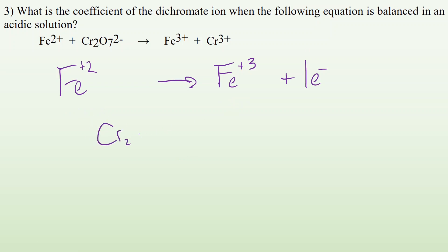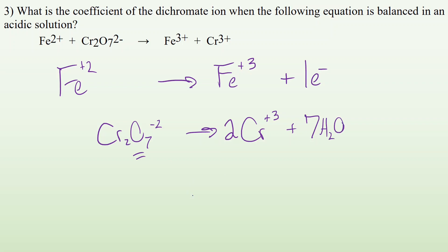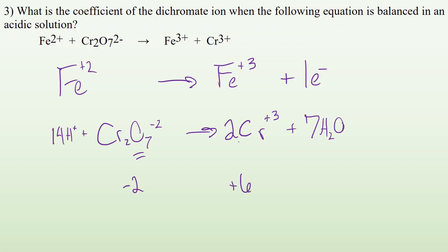Now the Cr₂O₇²⁻ half-reaction — it becomes Cr³⁺. Balance elements that aren't oxygen or hydrogen: two Cr on the left, one on the right, so put a two in front of Cr³⁺. Balance oxygens by adding water: seven on the left, so add seven H₂O on the right. Balance hydrogens: seven times two is fourteen H on the right, so add 14H⁺ to the left. Now balance the charges: 14 plus and a minus two gives positive twelve on the left; two Cr³⁺ gives plus six on the right. I need to add six electrons to the left to bring the charge down to plus six.